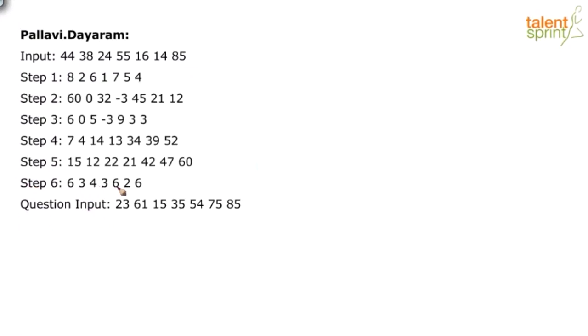Now, when you look at the last step, what do you find? 6, 3, 4, 3, 6, 2, 6. Now, this should blow up your mind. Because the input had some other numbers: 44, 38, 24, 55, 16, 14, 85. And these numbers have now been finally changed to 6, 3, 4, 3, 6, 2, 6.